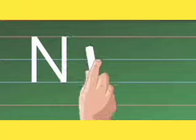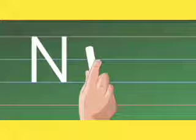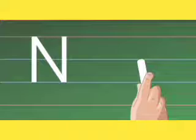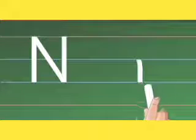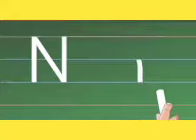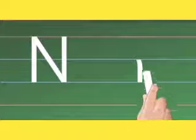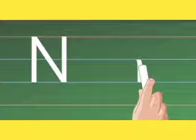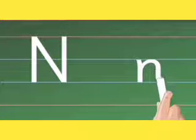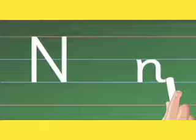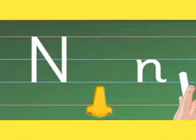Now small n. Start from the middle. Draw a standing line till the bottom. Go to the middle and make a curve reaching down with a small curl at the bottom.